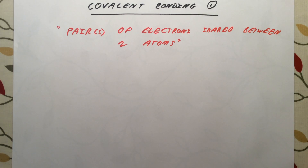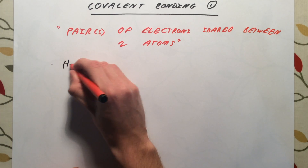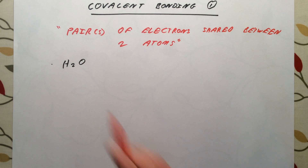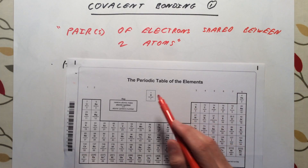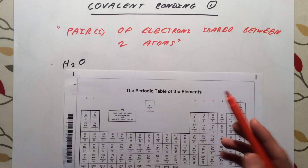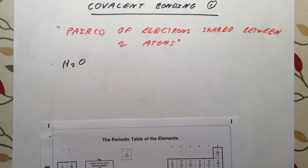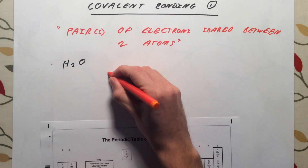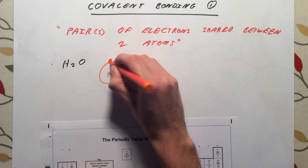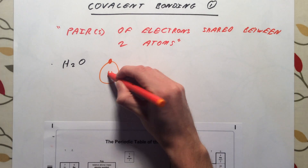The first example we are going to look at is H₂O, or water. When we start drawing these dot and cross diagrams, it helps to draw out the atoms we are working with first. In H₂O, we have two hydrogen atoms and one oxygen. I'm going to draw a hydrogen atom which has got one electron in its outer shell, and I'm going to represent that electron with a dot rather than a cross.